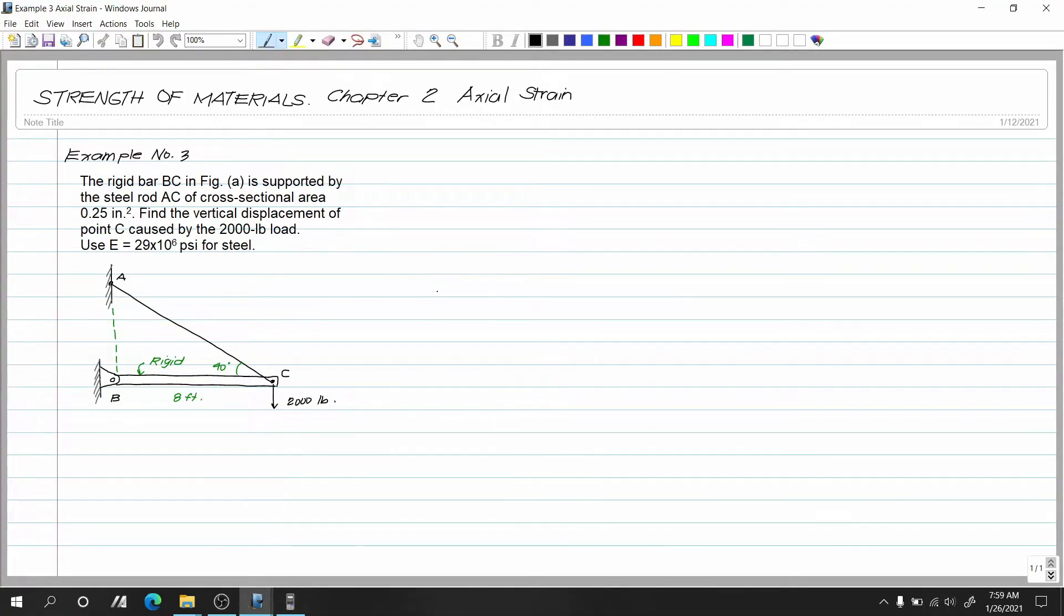This is our example number 3 for axial strain. The rigid bar BC in figure A is supported by the steel rod AC of cross-sectional area of 0.25 inch squared. Find the vertical displacement of C caused by the 2,000 pounds. Use E is equal to 29 times 10 raised to 6 psi for steel.